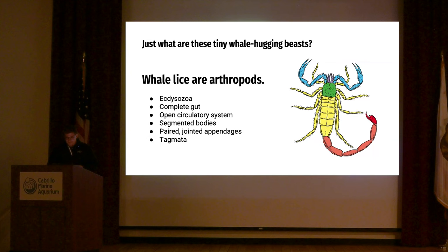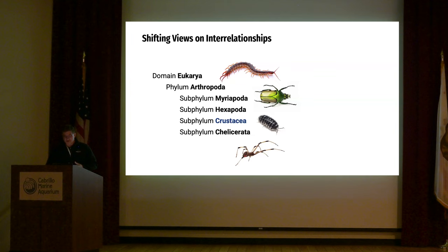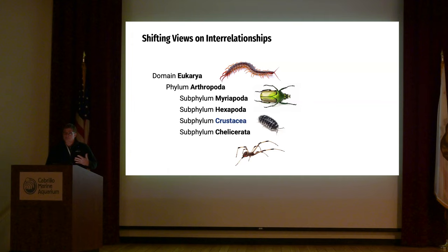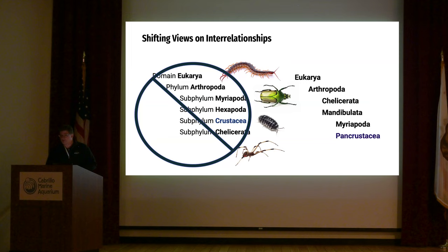Within Arthropoda, we have the crustaceans I wish to talk about tonight. The classification I'm showing you is the one found in most textbooks. But as we explore these organisms, find more species, and look at DNA and new microscopy tools, we come up with new ideas about their relationships and new hypotheses about how evolution has unfolded. We're now talking about organisms within a group known as Pancrustacea. On one side we have Myriapoda — centipedes and millipedes. Then Hexapoda — six-legged insects.